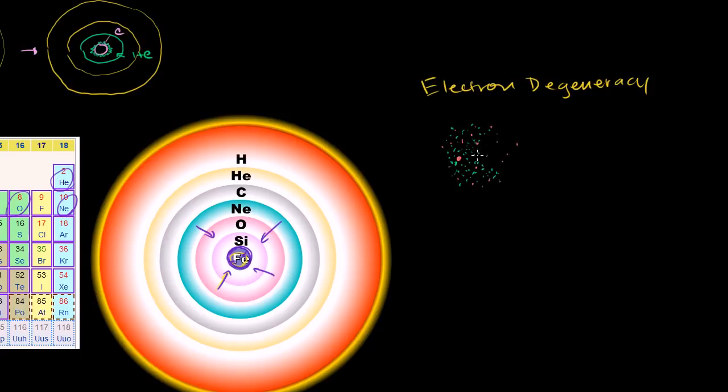And in the case of a less massive star, in the case of a white dwarf, that's how a white dwarf actually maintains its shape because of the electron degeneracy pressure.